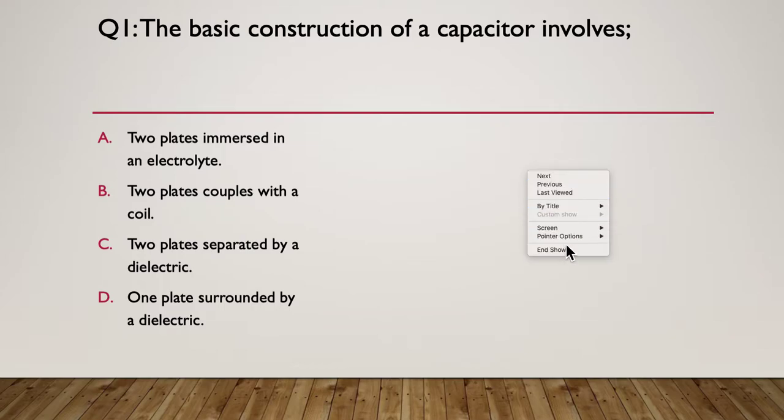So, here's our question one, and I'll just turn my pointer on. The basic construction of a capacitor involves what? A, two plates immersed in electrolyte. B, two plates coupled with a coil. C, two plates separated by a dielectric. D, one plate surrounded by a dielectric. So, you pause here, have a think about how you'd like to answer the question A, B, C, or D.